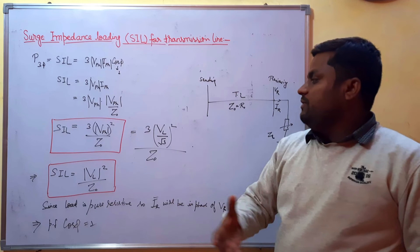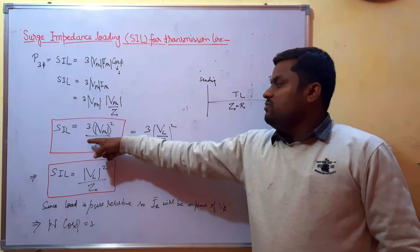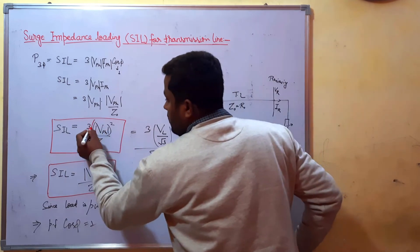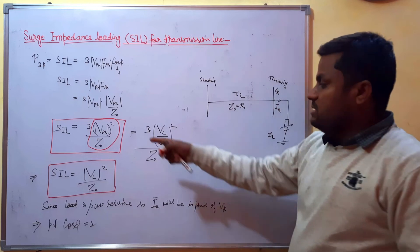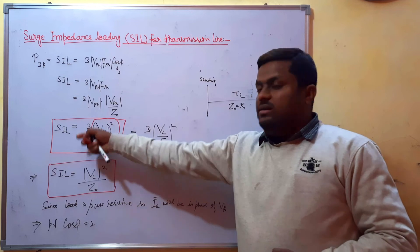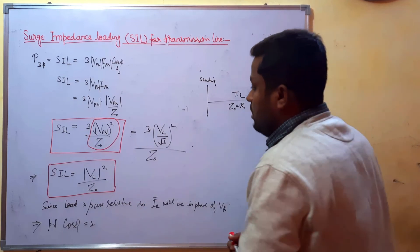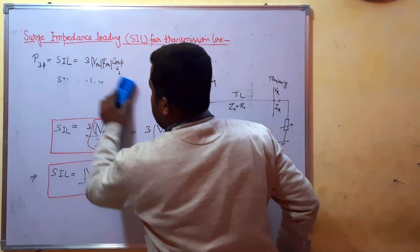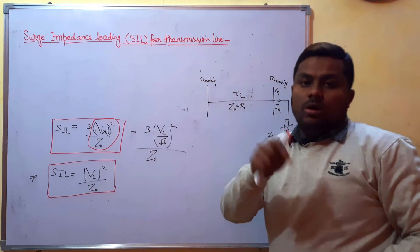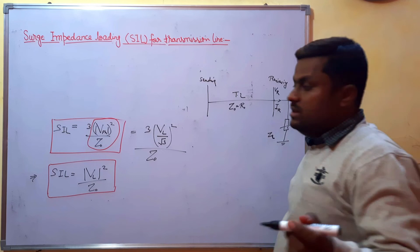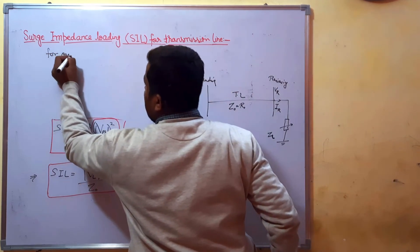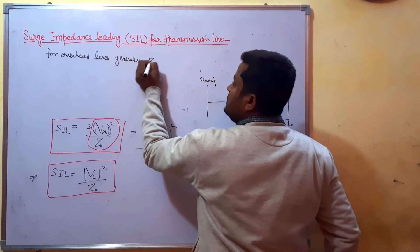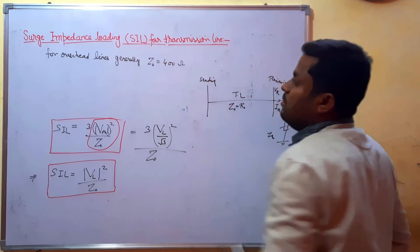If voltage is considered as phase voltage, the per-phase formula applies, and multiplied by three gives the total SIL. If expressed in line voltage, SIL = VL² / Z0. For lossless overhead transmission lines, the value of Z0 is typically equal to 400 ohms.